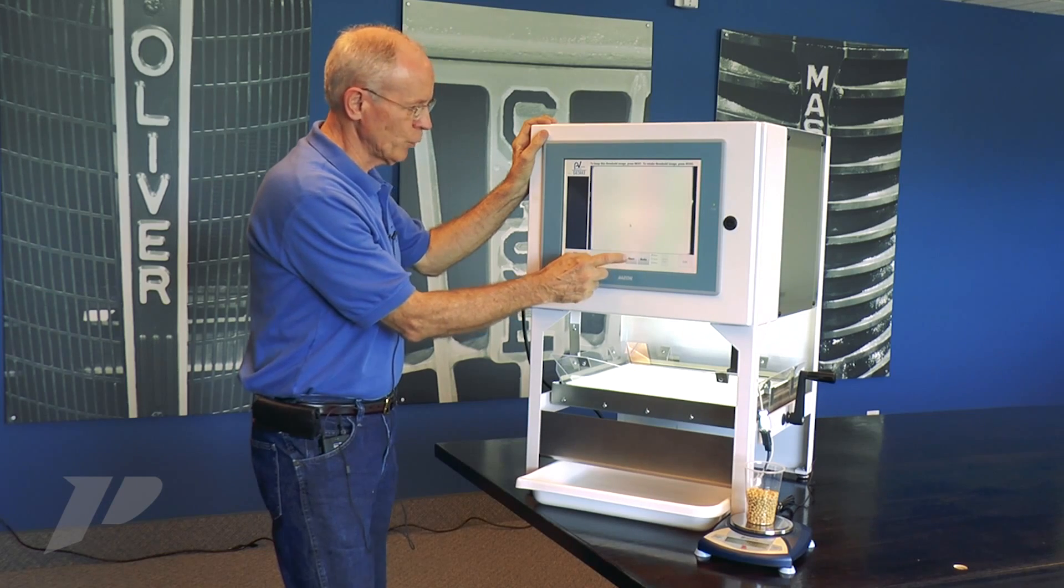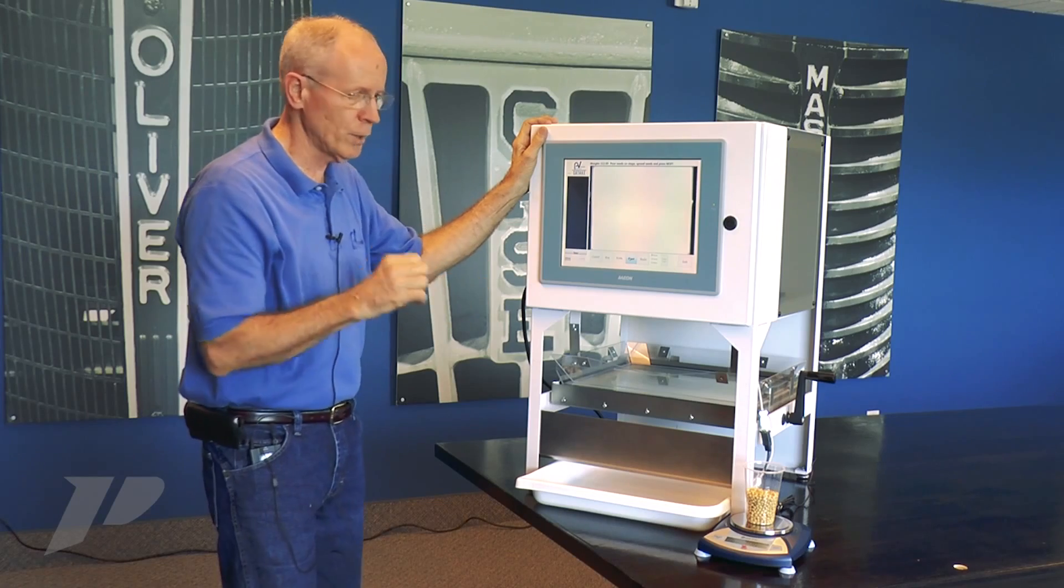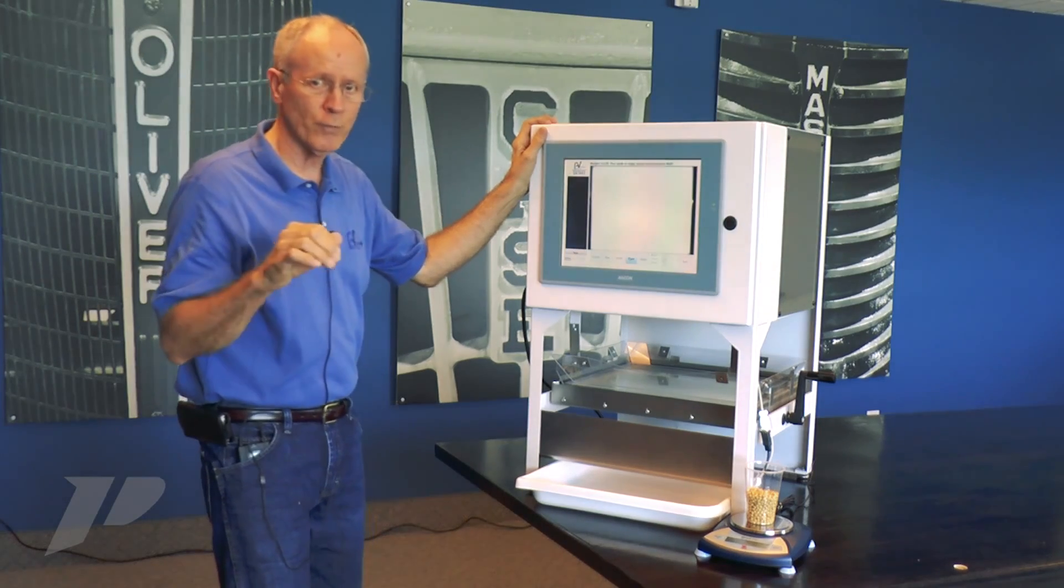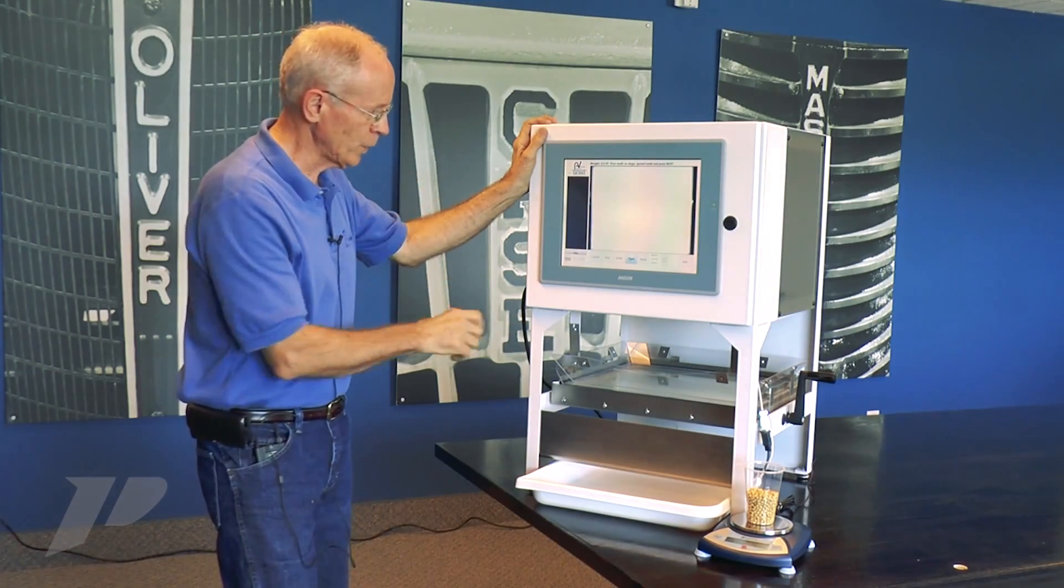In the vision business, we want to look at what's behind us. We want a background image with nothing on it. Then we add the product, take a picture of that, and now we're going to see the difference between the background image and the product image, and that's what we really want to count.